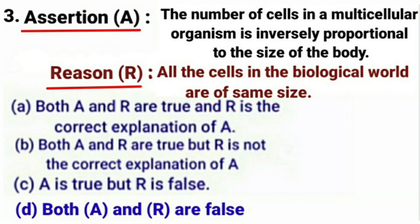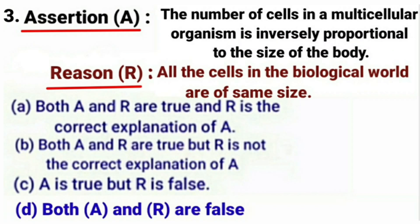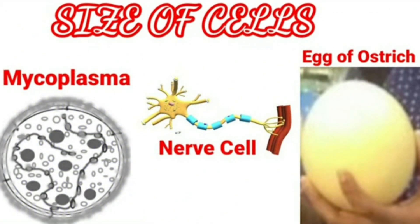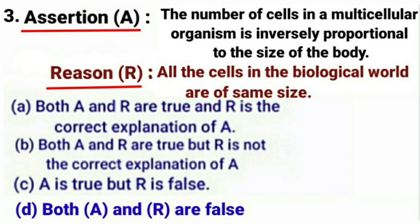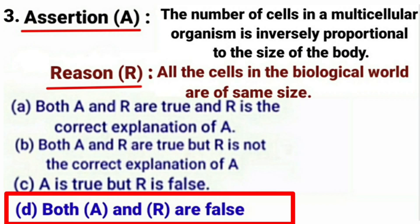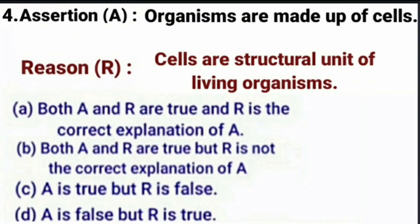Next question. Assertion: The number of cells in a multicellular organism is inversely proportional to the size of the body. Reason: All cells in the biological world are of the same size. In the assertion, the number of cells in a multicellular organism is actually directly proportional to the size of the body, so this statement is wrong. It is a fact that cells vary greatly in their size — Mycoplasma cells are the smallest, nerve cells are the longest, and egg cells of the ostrich are the largest. Cell sizes are related to the specific function they perform, so the reason is also false. The correct answer is option D — both assertion and reason are false.